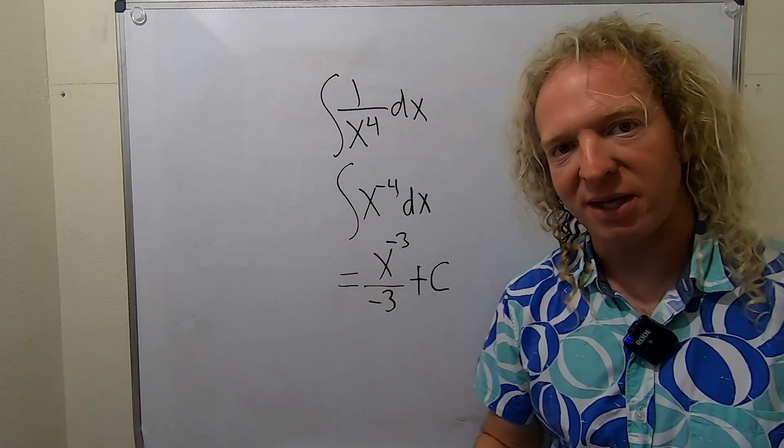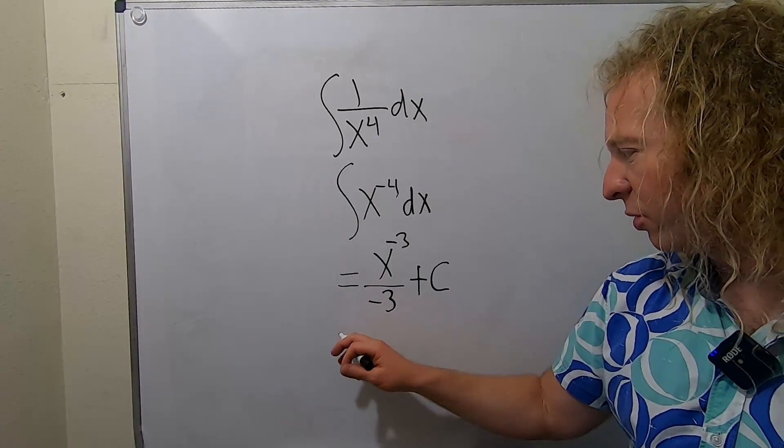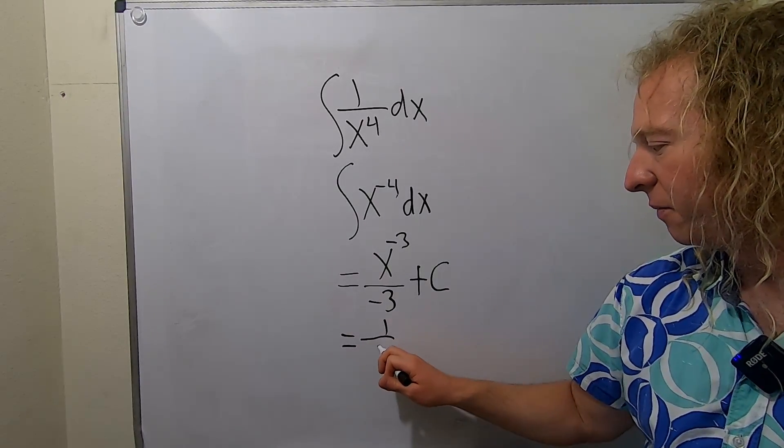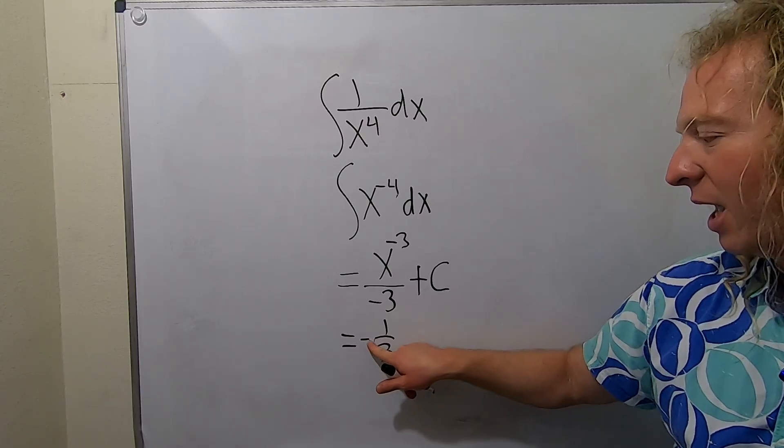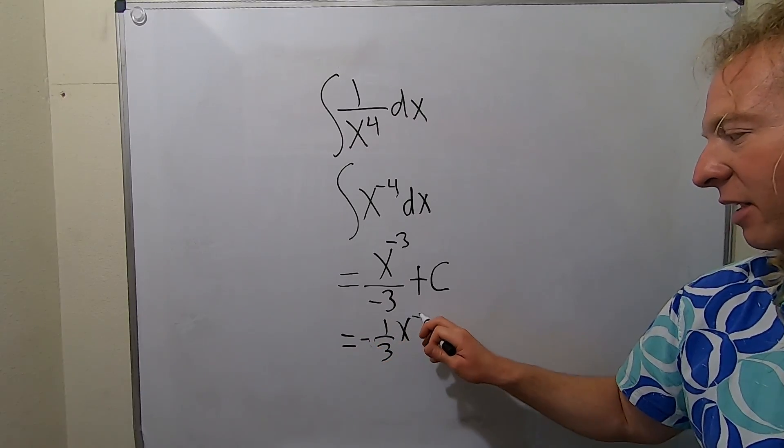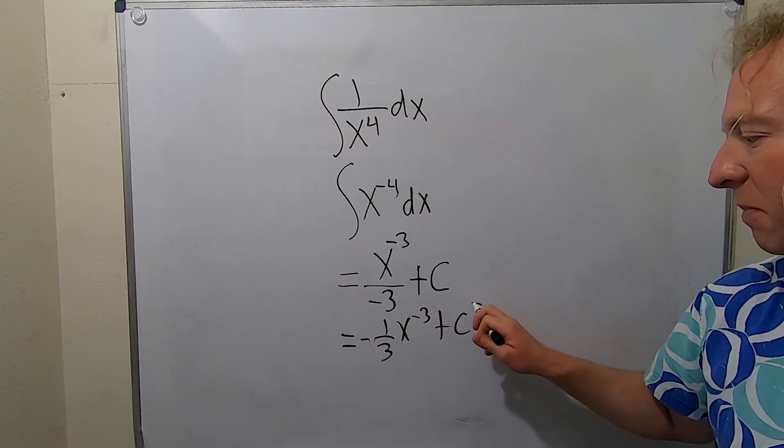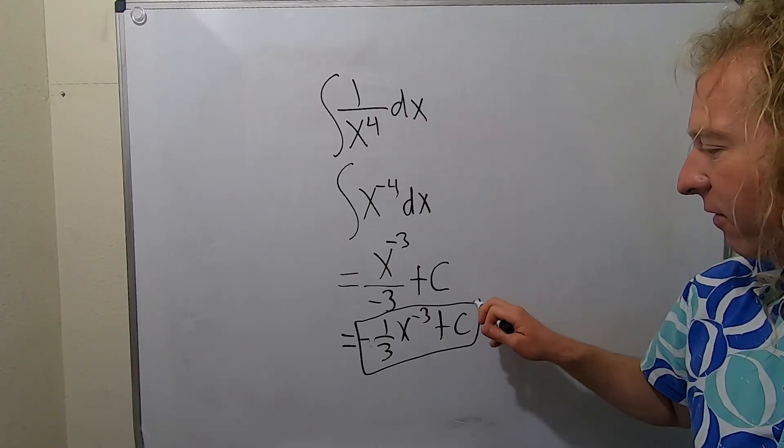The last thing we can do to make the answer look better is to rewrite this as negative 1 3rd. That's a negative, there we go. And x to the negative 3 plus c. And that would be a perfectly acceptable final answer.